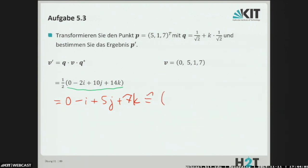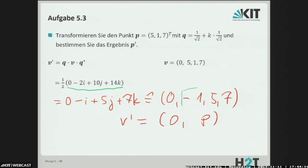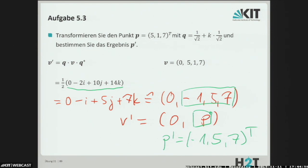If we want to write that in tuple form, that is (0, -1, 5, 7). We had learned at the beginning how to represent a position in Cartesian space as a quaternion. The reverse case also applies of course: our new V' has the form (0, P), so we find our new P' in the vector part. So our P after the rotation is the vector (-1, 5, 7). In this way we can rotate vectors in 3D space using unit quaternions.